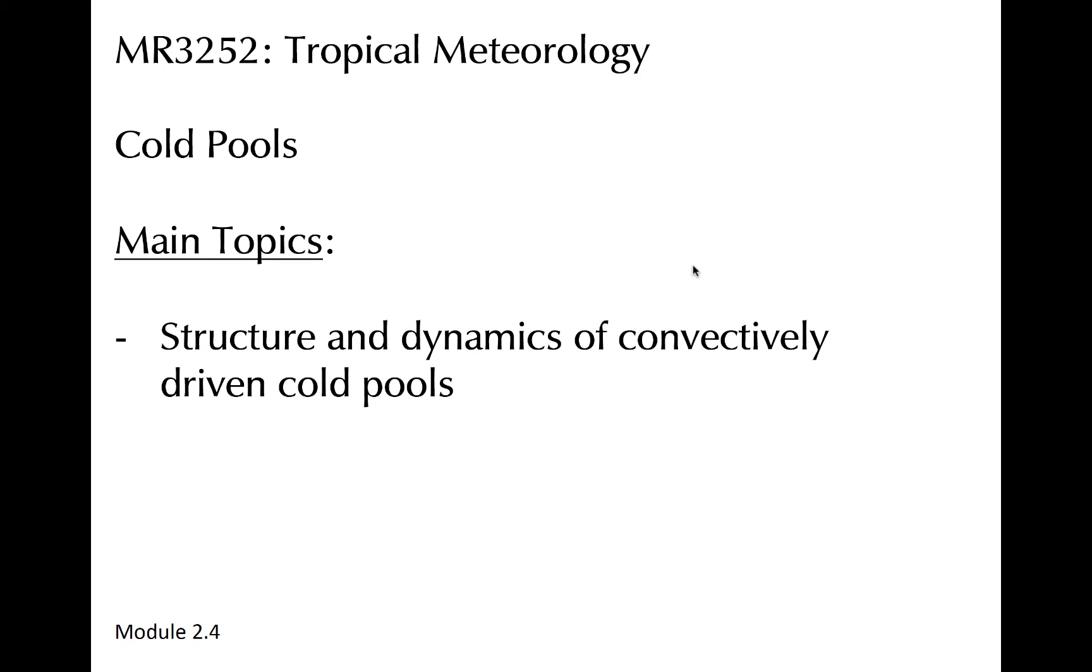This module will discuss some of the characteristics of cold pools, which thus far we have discussed in the context of downdrafts in mesoscale convective systems. Cold pools are one mechanism for forced low-level convergence that can support the vertical growth of convection in the tropics.